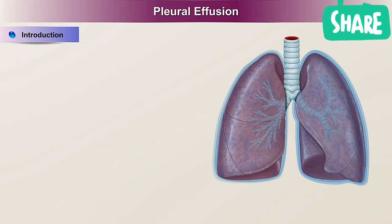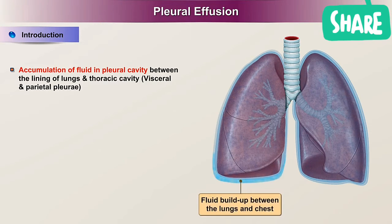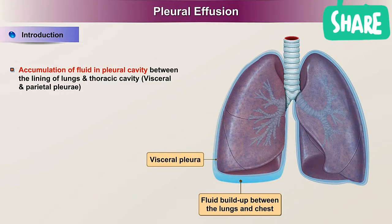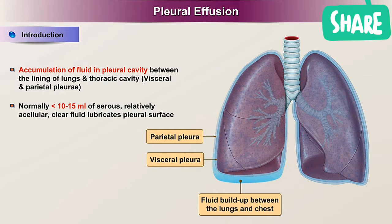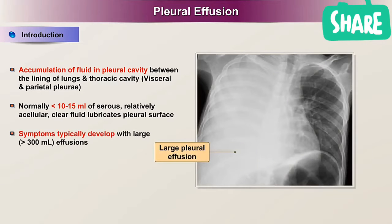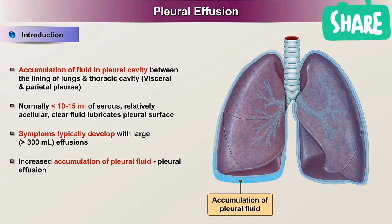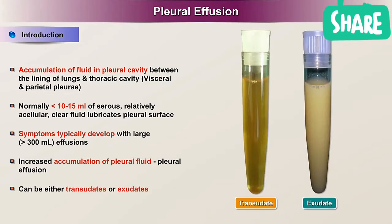Pleural effusion is an accumulation of fluid in the pleural cavity between the lining of the lungs and the thoracic cavity, that is the visceral and parietal pleurae. Normally, no more than 10 to 15 ml of serous, relatively acellular, clear fluid lubricates the pleural surface. Symptoms typically only develop with large, more than 300 ml, effusions. Increased accumulation of pleural fluid is called pleural effusion. It can be either transudates or exudates.